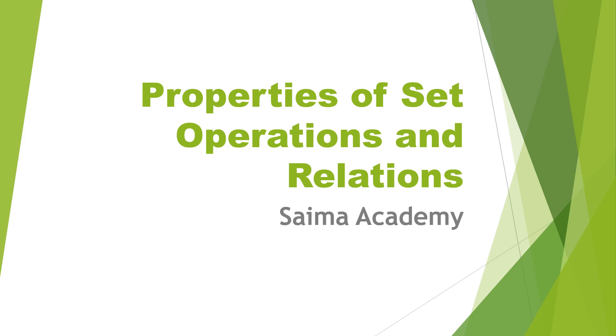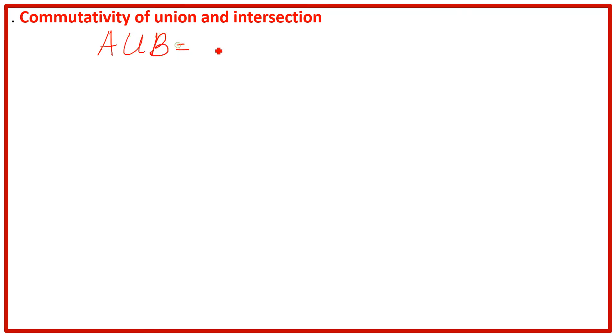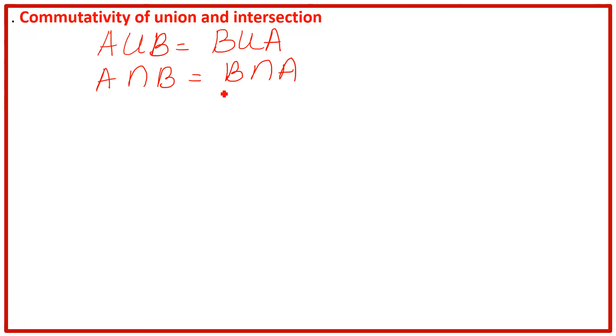This is the second part of properties of set operations and relations, where we are going to discuss the commutativity of union and intersection. In the last lesson we discussed the first property. Now we are going to the second property, which is commutativity of union and intersection, and it states that A union B equals B union A, and A intersection B equals B intersection A. So we have to prove these two properties.